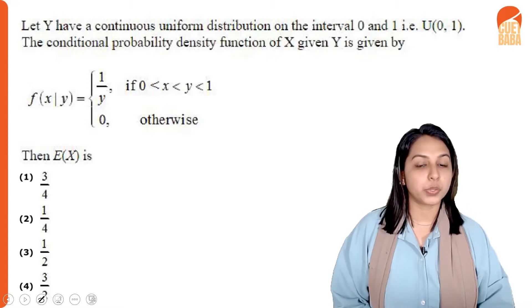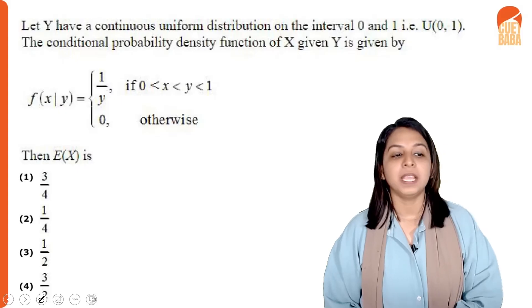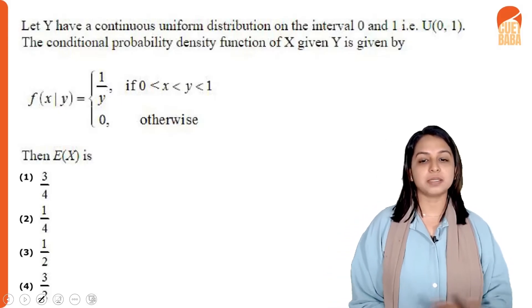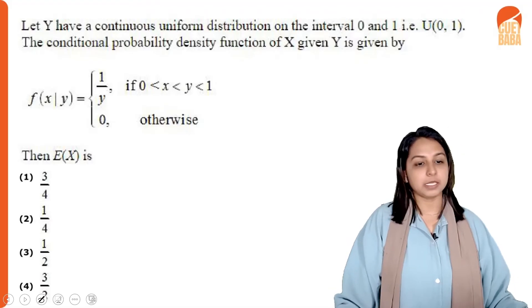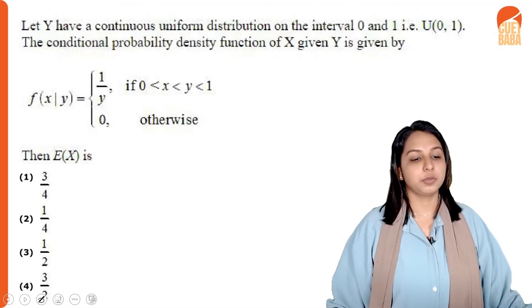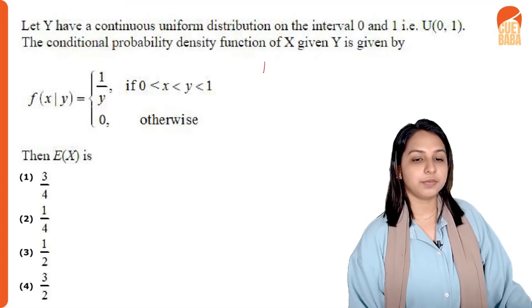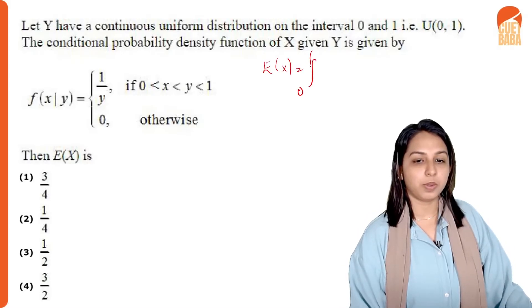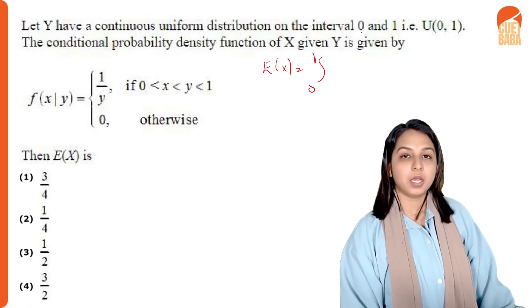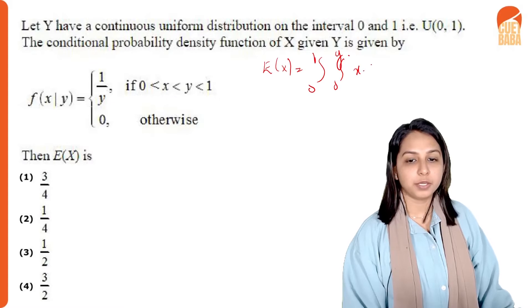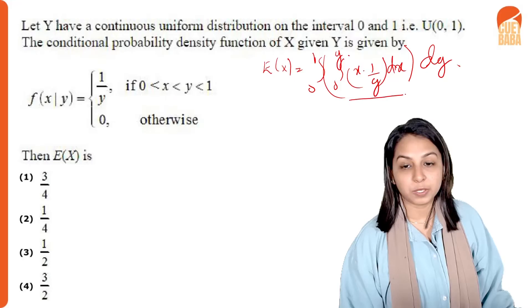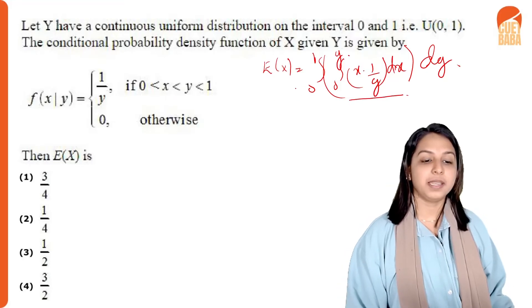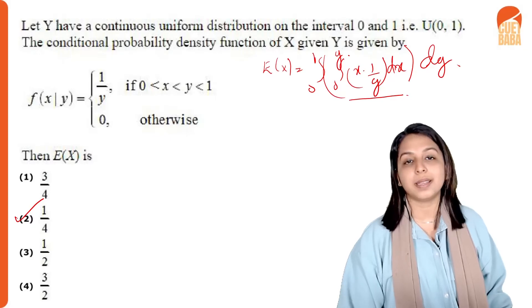Let y have a continuous uniform distribution on the interval (0, 1). The conditional pdf of x given y is f(x|y) = 1/y for 0 < x < y < 1, and 0 otherwise. We need to find E[X]. The equation is E[X] = integral from 0 to 1, integral from 0 to y, of x · (1/y) dx dy. Integrating first with respect to x and then with respect to y, the final answer is 1/4. Option 2 is the right answer.